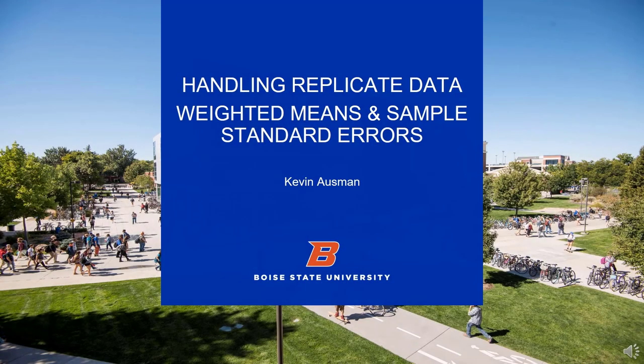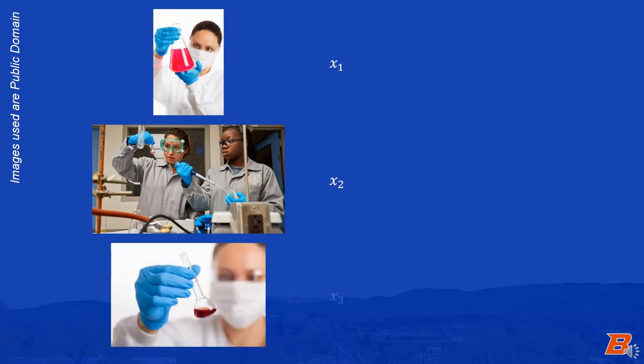It is common in science to run replicate experiments to determine a desired physical quantity. While some details of these experiments may differ, such as the mass of the sample being studied, those differences are accounted for in the data analysis so that each replicate experiment truly gives an independent measurement of the same desired quantity.